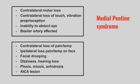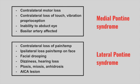Next is a patient with contralateral loss of pain and temperature, ipsilateral loss of pain and temperature on the face, facial drooping, dizziness, hearing loss, ptosis, miosis, and anhidrosis — typically an AICA lesion. This is lateral pontine syndrome. The loss of pain and temperature is due to the spinothalamic tract, which is more lateral in the brainstem. Cranial nerves 5 and 7 are affected, and the cervical sympathetic chain is affected leading to Horner's syndrome presenting as ptosis, miosis, and anhidrosis.